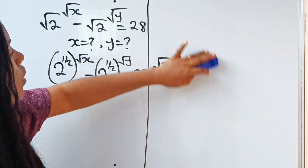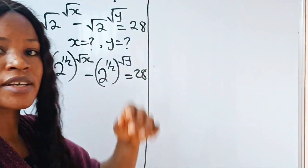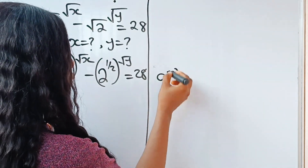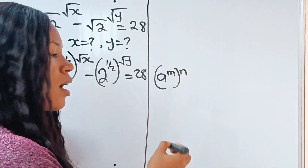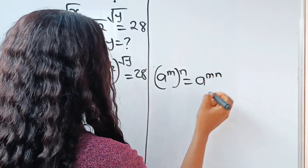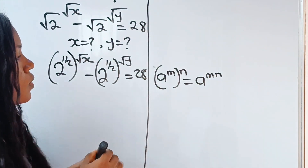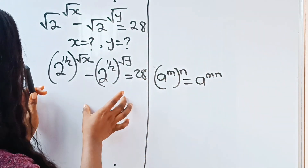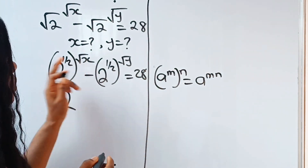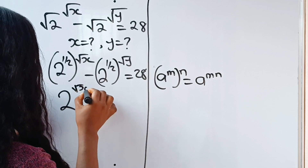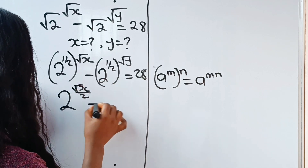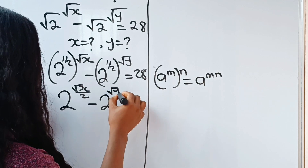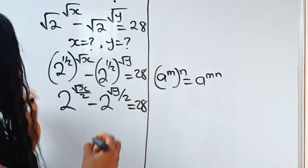Now let's recall another law of exponents that states that a to the power of m, raised to the power of n, is equal to a to the power of m·n. So that means we can write this as 2 raised to the power of root x over 2, minus 2 raised to the power of root y divided by 2, is equal to 28.